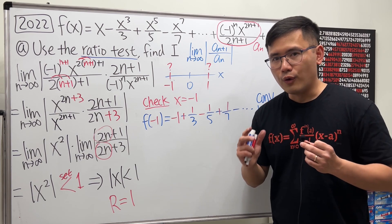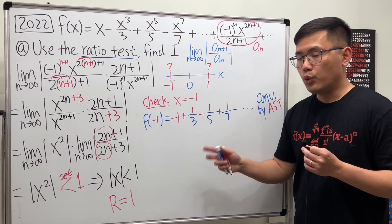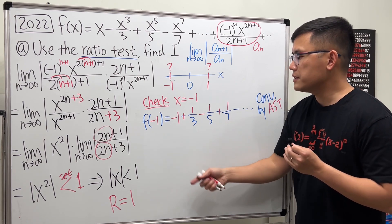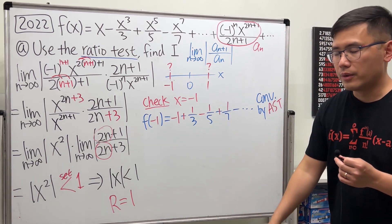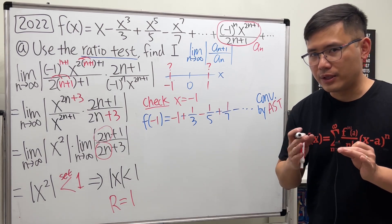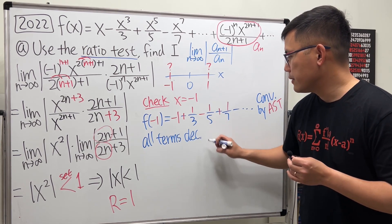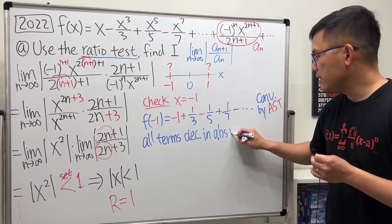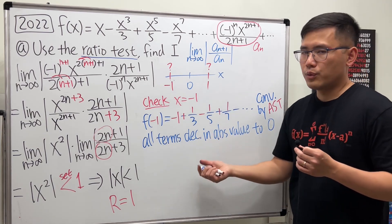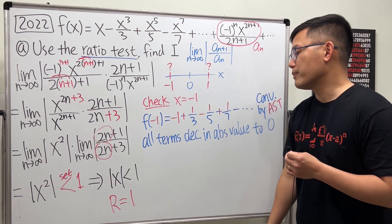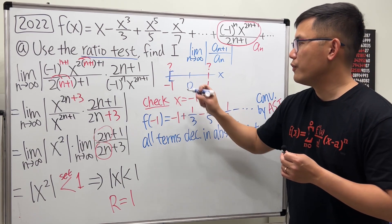This alternating series converges by the alternating series test. Using the same reasoning as the official scoring guide: the terms, if you ignore the signs — 1, 1/3, 1/5, 1/7 and so on — are clearly decreasing in absolute value and approaching zero. So the limit of the terms equals zero. That's sufficient to conclude convergence, so we include negative 1 in our interval.